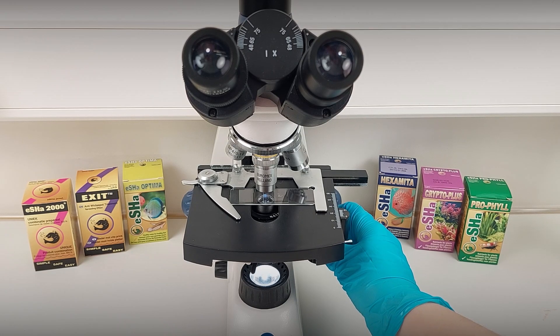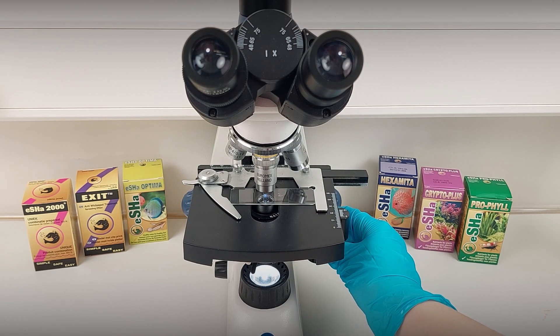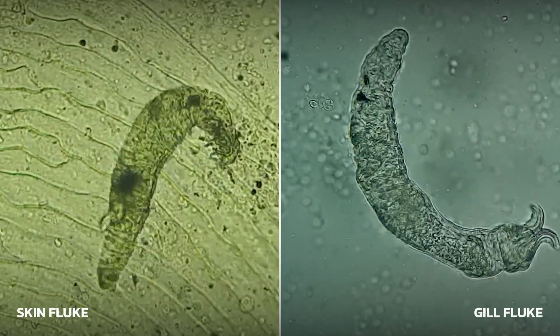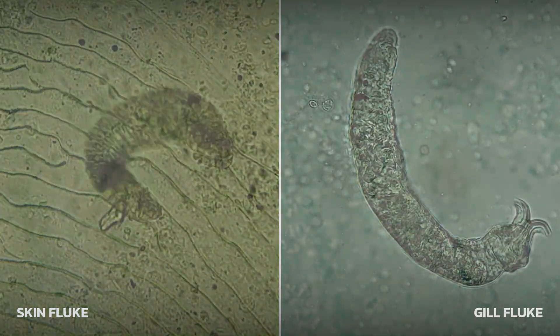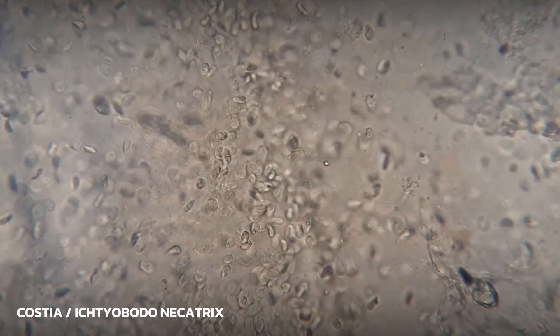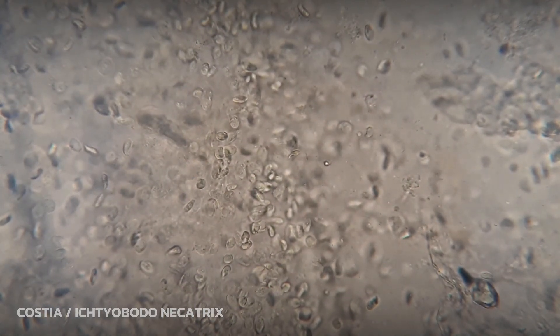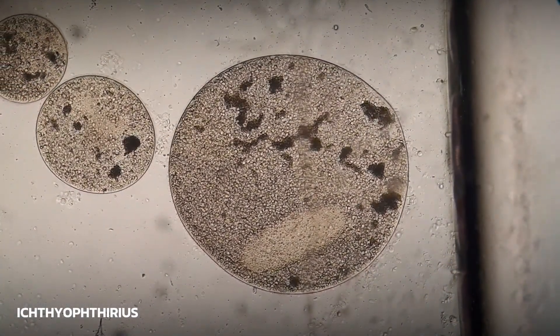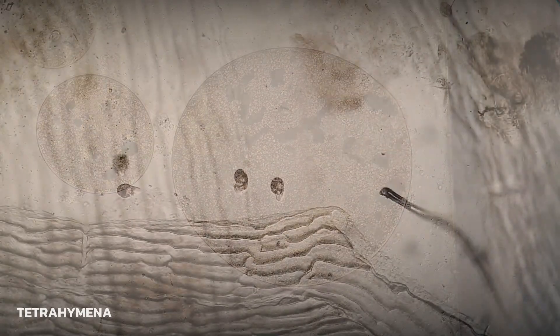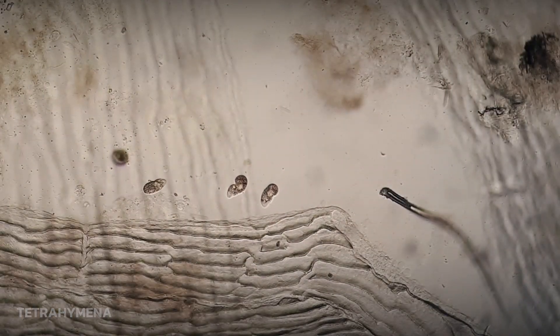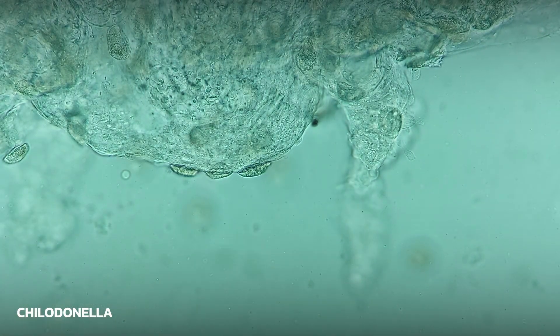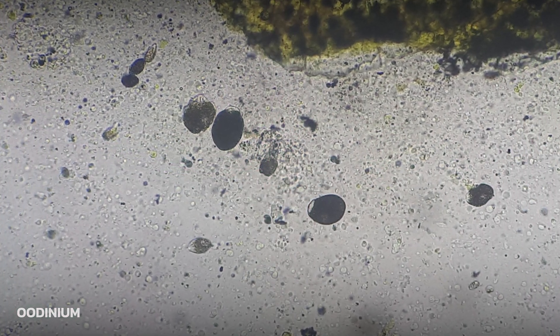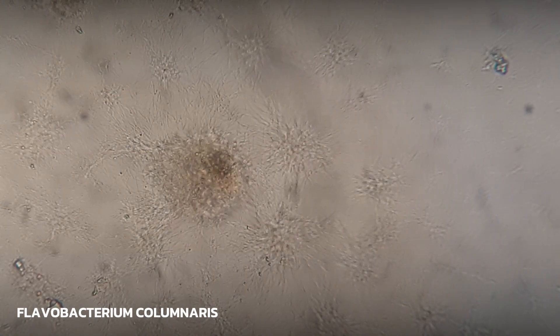Some parasites will stop moving after about 5 minutes. The main parasites you can find with the skin scrape are Gyrodactylus, Costia or Ichthyobodo necatrix, Trichodina, Ichthyophthirius, Tetrahymena, Chilodonella, Oodinium, and Flavobacterium columnare.